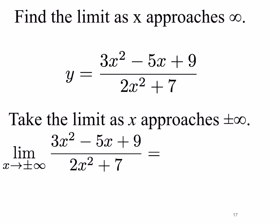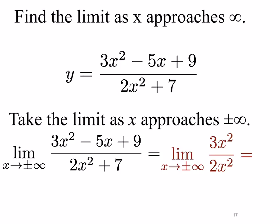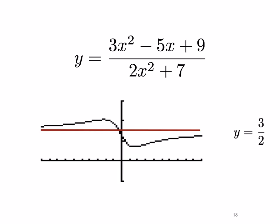To summarize: the limit as x approaches plus or minus infinity of 3x squared minus 5x plus 9 over 2x squared plus 7 reduces to 3x squared over 2x squared. Cancelling the x squares gives 3/2 as the limit, confirming that y equals 3/2 is a horizontal asymptote. Looking at the graph of this function, we can see it leveling off toward 3/2 as x goes to both plus infinity and minus infinity.